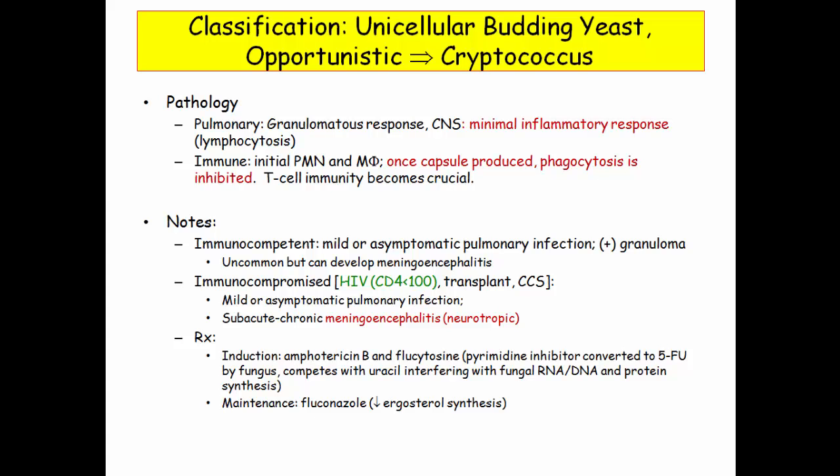Treatment is listed only to reinforce the mechanism of action of the agents. Flucytosine is listed and is the only pyrimidine inhibitor. As a pyrimidine inhibitor, it competes with uracil, interfering with both RNA and DNA synthesis.